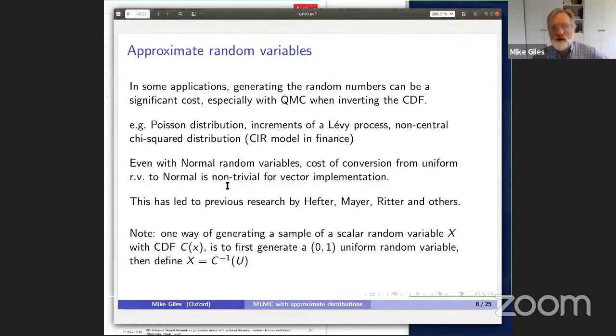We were particularly thinking about some more complicated distributions such as a non-central chi-squared distribution that comes up in the CIR model in finance or Heston stochastic volatility. This work was primarily looking at normal random variables on the basis that we stood a chance of doing the numerical analysis to analyze the effectiveness. One natural way of generating a scalar random variable X is to first generate a uniform random variable on the 0-1 interval, then define X as being the inverse of the CDF function applied to that uniform random variable. We're going to be approximating the inverse normal CDF function to generate approximate normal random variables.